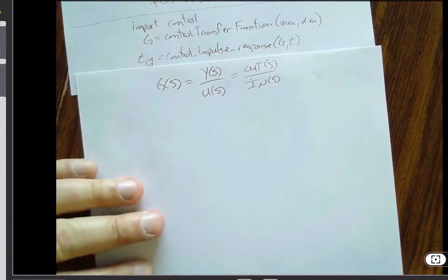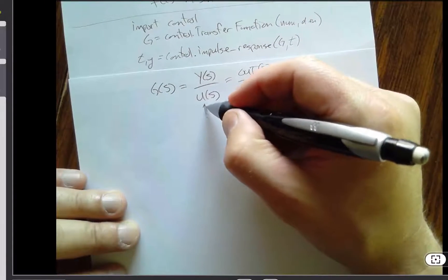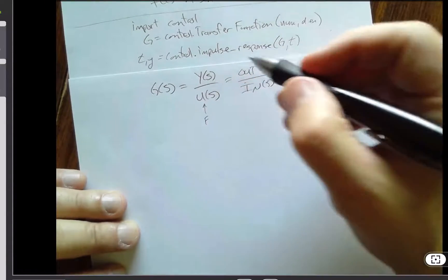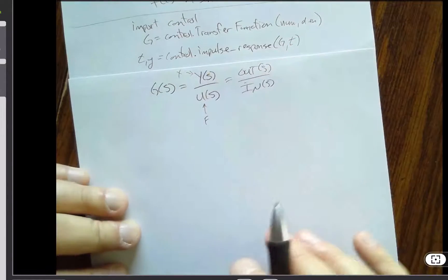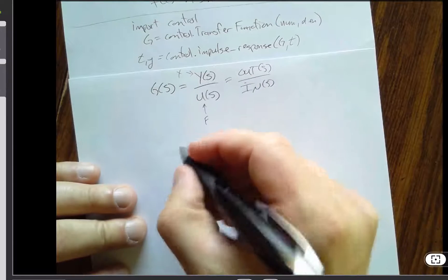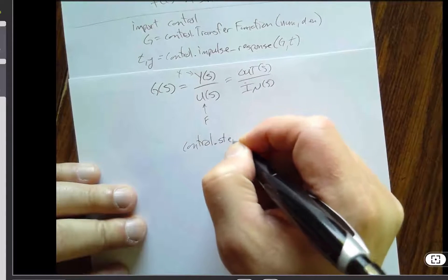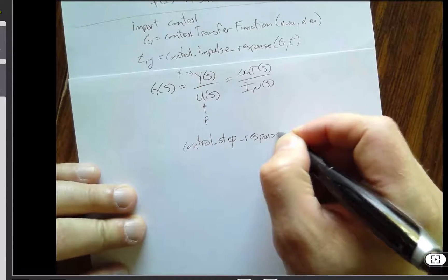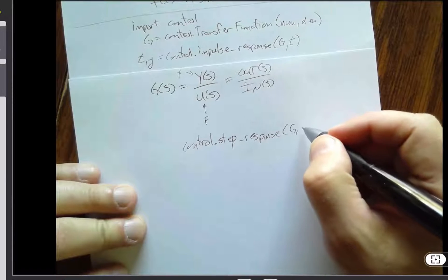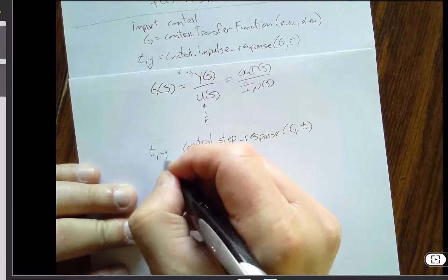But for our purposes to move back to the mass spring damper, this would tend to be f, and this would tend to be x. Now, where that gets especially confusing, so there's an impulse response function, there is also a control.step response function that, again, takes g and t and returns t comma y.